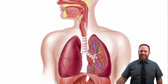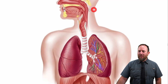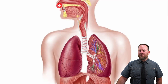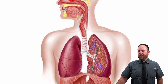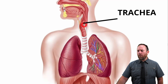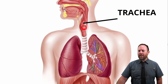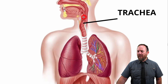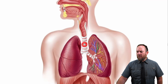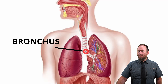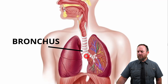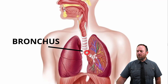Air flows into your nose or your mouth, down your windpipe — your trachea. As it goes down your trachea, the airway splits into two: the bronchi. You have a left and a right bronchus, and they continue going further down.